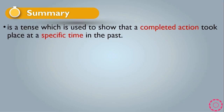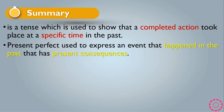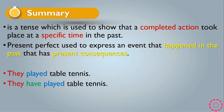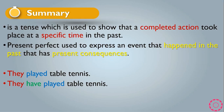In summary: past simple is a tense used to show that a completed action took place at a specific time in the past. Present perfect is used to express an event that happened in the past that has present consequences. For example: 'They played table tennis' is past simple; 'They have played table tennis' is present perfect. Remember that we recognize present perfect by the use of have or has. Thank you for listening.